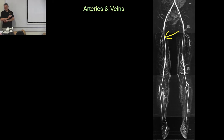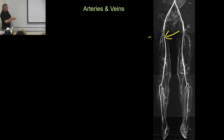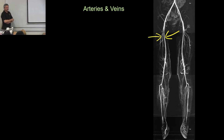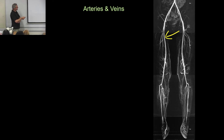Despite the name, the superficial femoral artery is actually the most important one. There's a little branch to the deep femoral artery — also known as the profunda — which is less important and stops quite soon, just feeding the muscles of the thigh itself. The superficial femoral artery continues down, weaving from the anterior of the thigh around to become posterior to the knee.